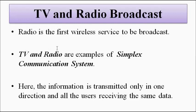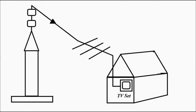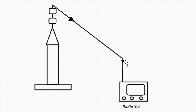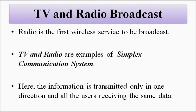Radio is the first form of wireless service ever used. TV and radio are examples of simplex communication systems where communication is one-way and unidirectional — information is transmitted from the TV or radio station directly to the television or radio set. The information transfer cannot happen in the reverse direction; the receiver cannot communicate back to the station.